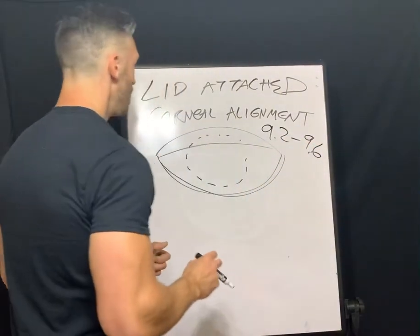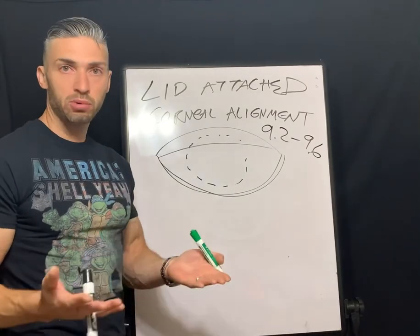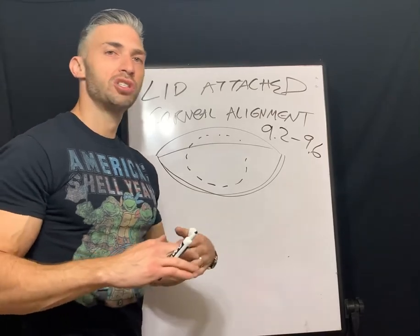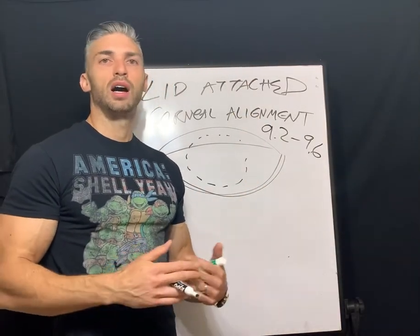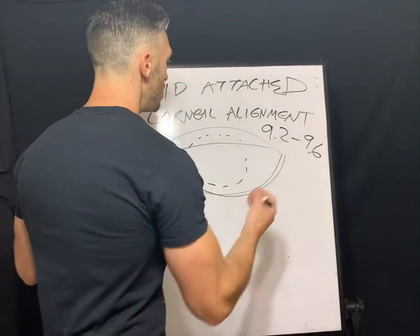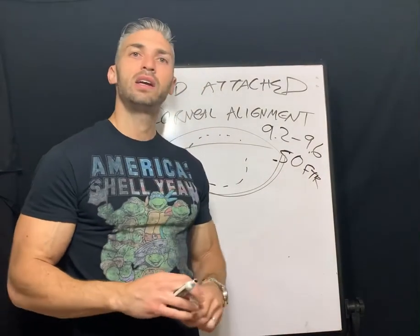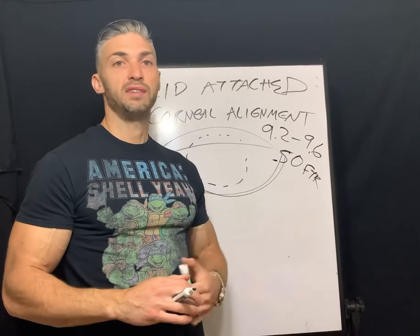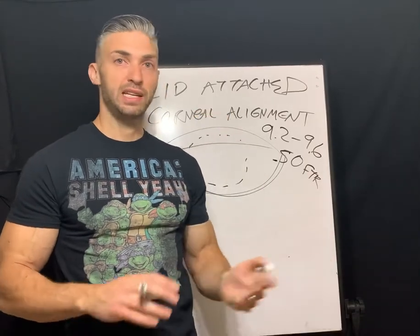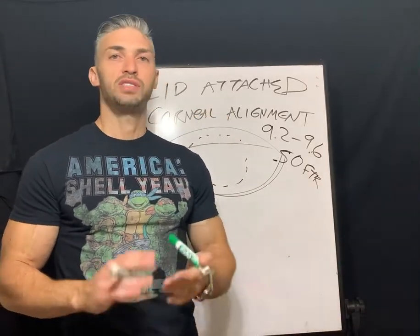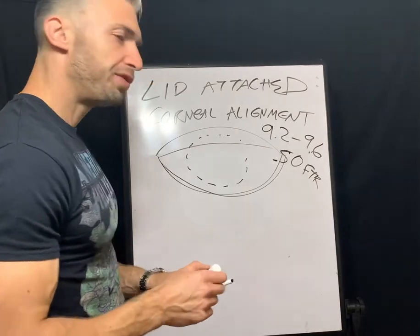The lid-attached fit uses lenses in about the 9.2 to 9.6 millimeter diameter range. Opposite from the interpalpebral fit, these are fit flatter than K — think looser, moving with the eyelid. You might start with a half a diopter flatter than K. On the NCLE, if a lens is fit flatter than K, add plus to your final answer; if steeper than K, add minus.